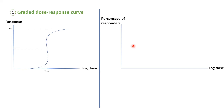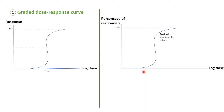We again get the same sigmoidal curve, and the maximum here is 100% of responders — the dose that elicits the response in all the population, all animals in the group. This curve represents our desired therapeutic effect from the drug.